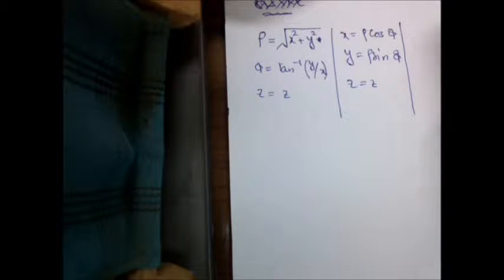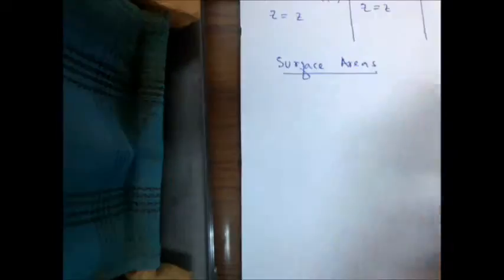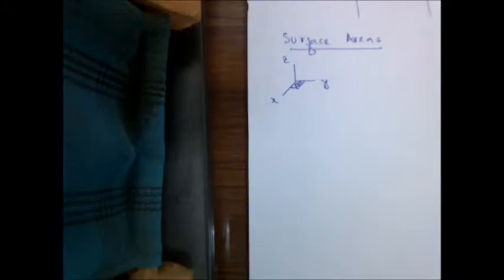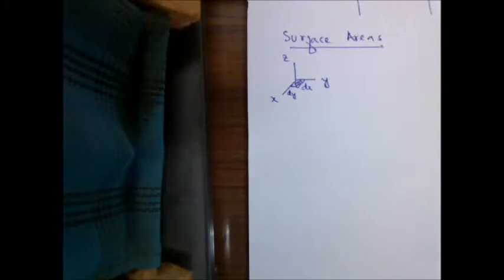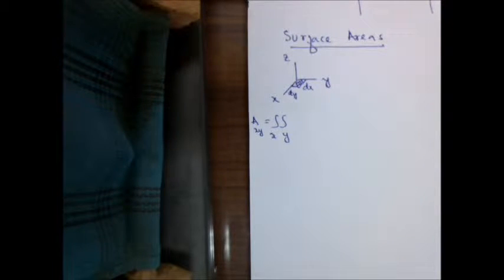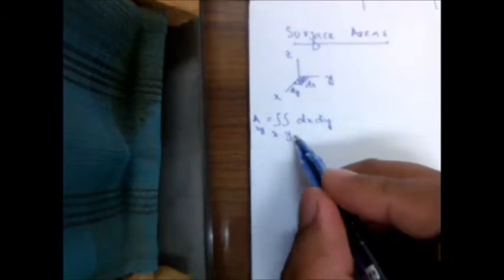Surface areas in Cartesian coordinate systems: suppose we have to work with the x, y plane. A very small incremental length along the y axis and along the x axis are represented as dx and dy, so any area in the x, y plane can be calculated by integrating dx and dy over the ranges of x and y.